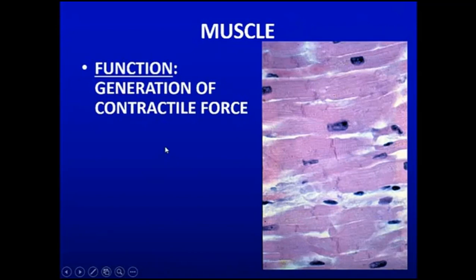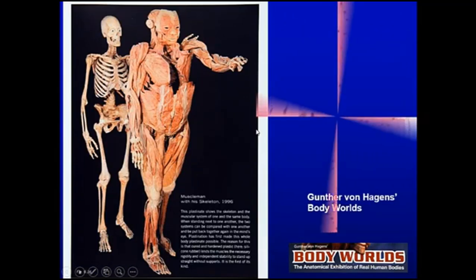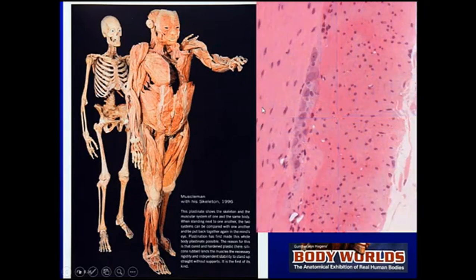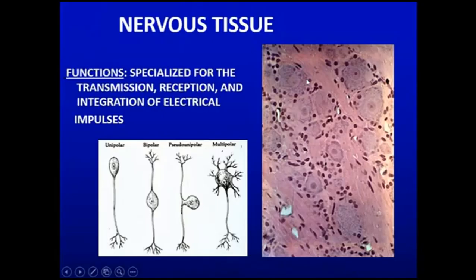Connective tissue is one of those four basic types of tissue, and so is muscle. Muscle generates contractile force. In the body wearable specimen, the muscle has walked out of the skeleton. That brings us to skeletal muscle. Another type of muscle is smooth muscle, which we see here in the digestive tract. And in between the layers we see nerve cells, with a nucleus, a nucleolus, and cytoplasm around here.